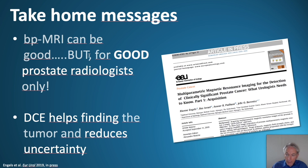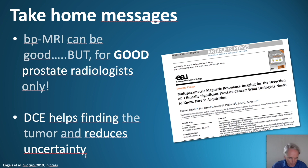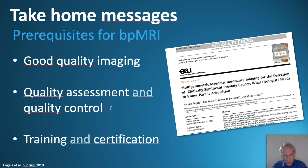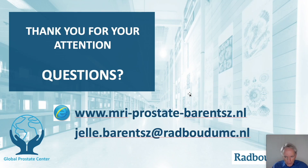Take-home messages: bi-parametric MRI can be good, but it is for experienced prostate radiologists only. DCE helps find small tumors and reduces uncertainty. The prerequisite for bi-parametric MRI — and this is most important — is good quality images. We need to develop objective quality assessment and quality control; we are currently working on objective bi-core criteria. You should measure your own quality — go to the MDT and ask how good you are. If you don't use contrast, ask yourself whether you are missing too many tumors. And last but not least, we need to work on training and certification.